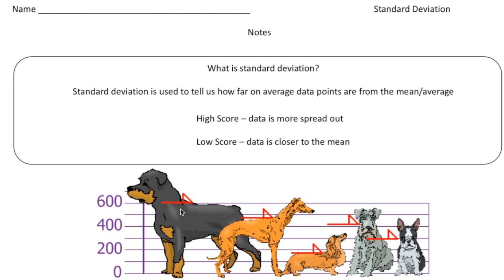To show you what standard deviation is, I'm going to talk about these five dogs. We have five dogs that range in different heights — a really tall German Shepherd and a really short hot dog in the middle, with a few dogs in between. Standard deviation tells us how far on average the data points are from the average. A high score means the data is really spread out, and a low score means the data is close together.